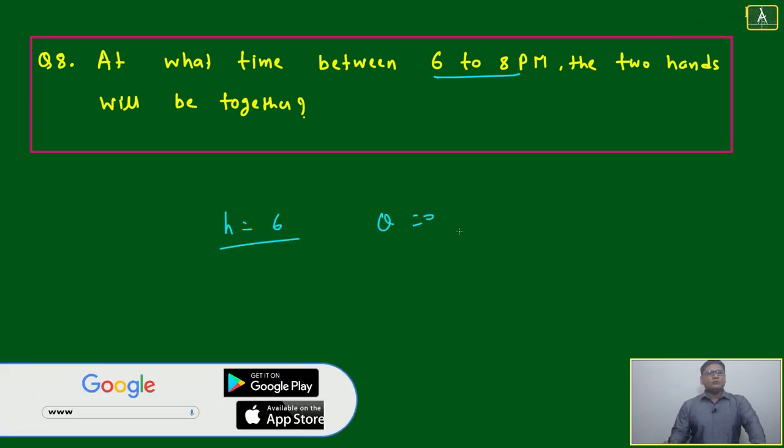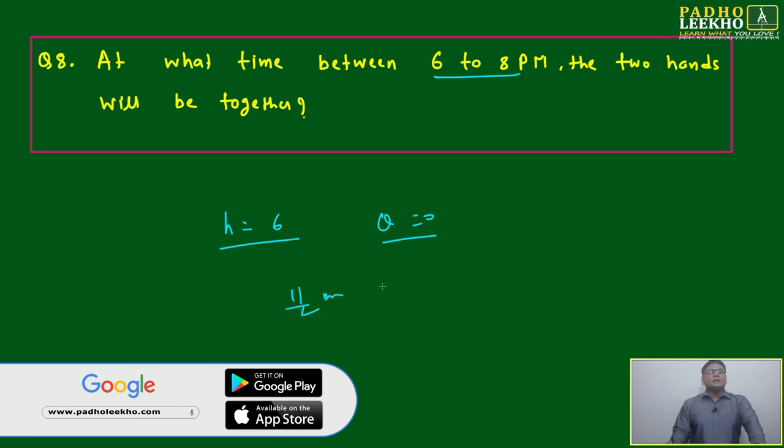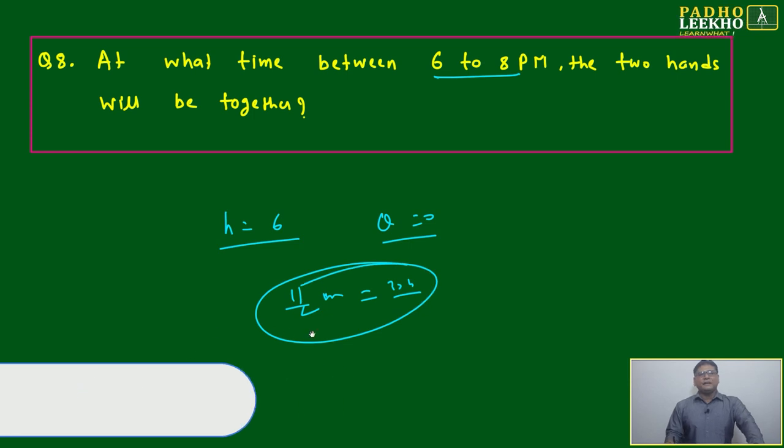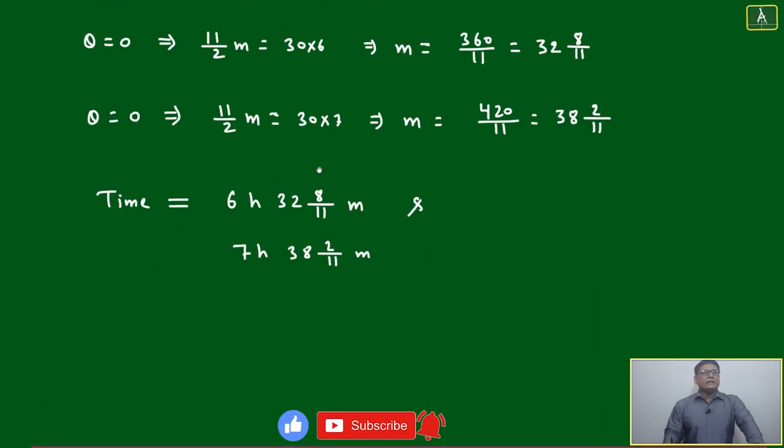Together means theta equal to 0. 11 by 2 m and 30h we have to make equal. We have to find the solution. Theta equal to 0, 11 by 2 m equal to 30 into 6, then m equal to this.